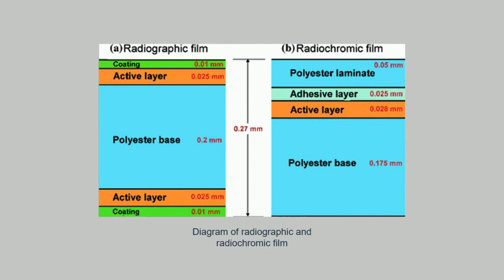This diagram shows the comparison of radiographic and radiochromic film. The major difference between these films is the position of the active layer and polyester base. For radiographic film, the polyester base is sandwiched between two active layers. However, for radiochromic film, the active layer is placed on top of the polyester base.